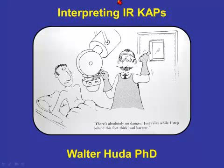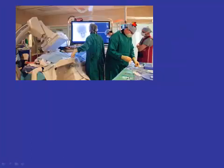In this final presentation on the Kerma area product in gray centimeters squared, what can we do with this number? As you'll see, we can convert it into doses — hopefully in terms of effective doses we understand — but we can do more. We can actually convert them into very approximate values of patient risk, and there really is a good reason for having some idea of what the risk to our patient is.